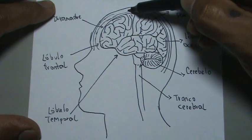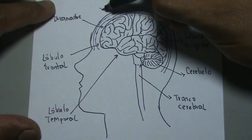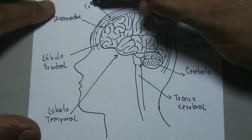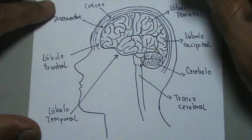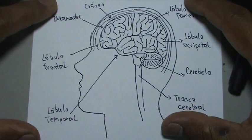Como una capita así. Este es el cráneo. Aquí tenemos nuestro cerebro humano.